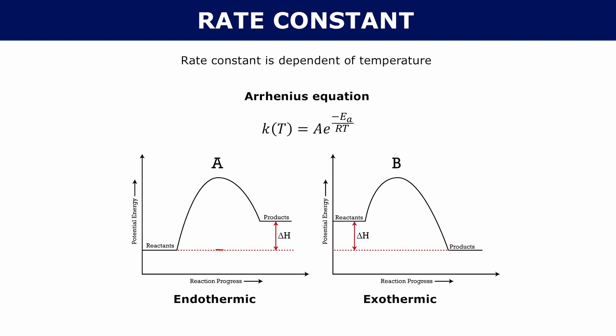So that is your Ea — it's the minimum amount of energy that particles need in order to form products. Your Ea in an exothermic reaction would be shown here. That's your activation energy.